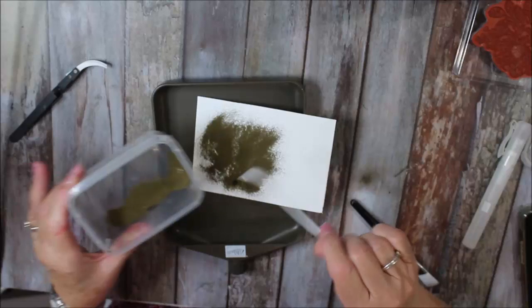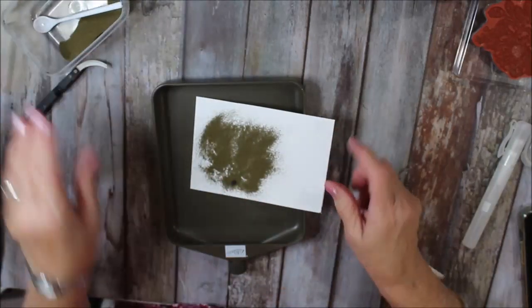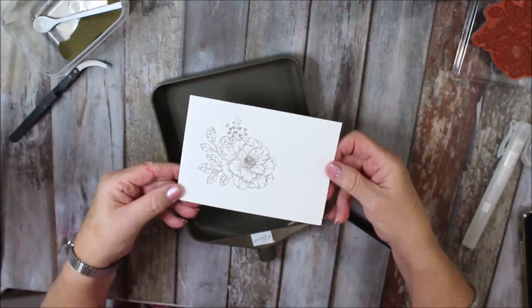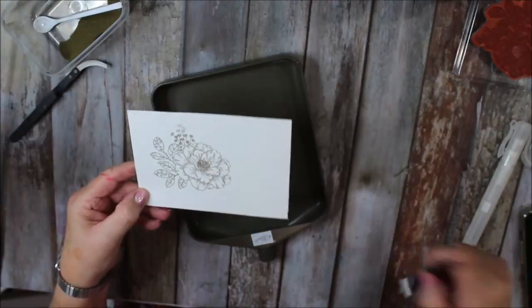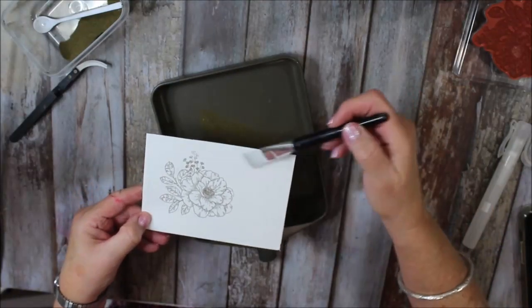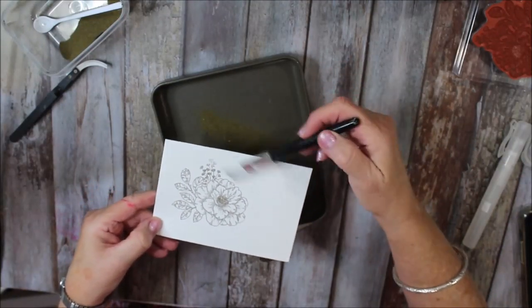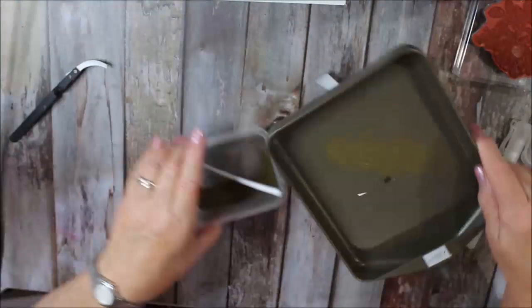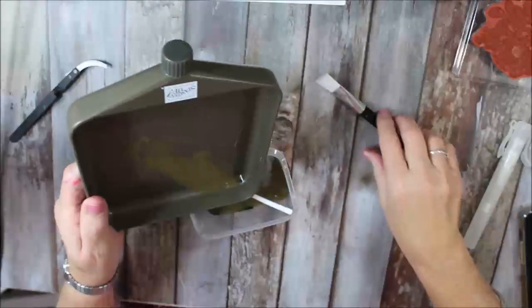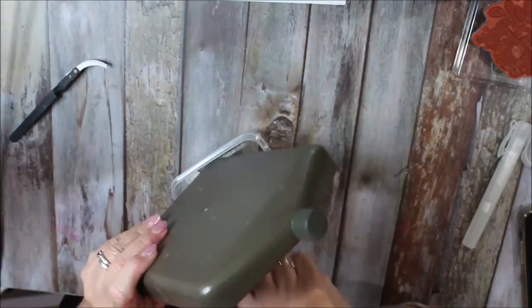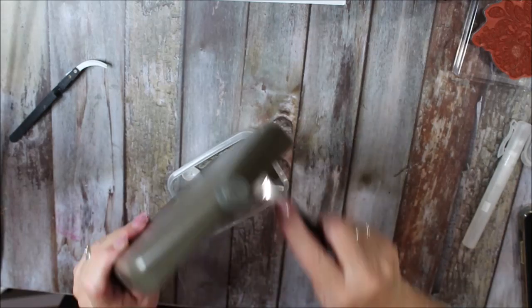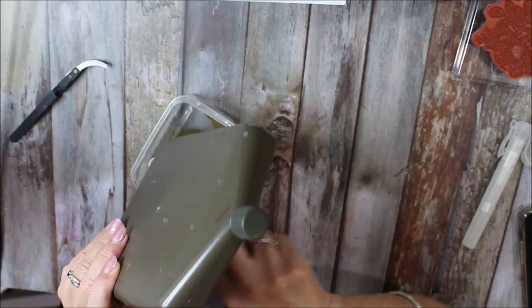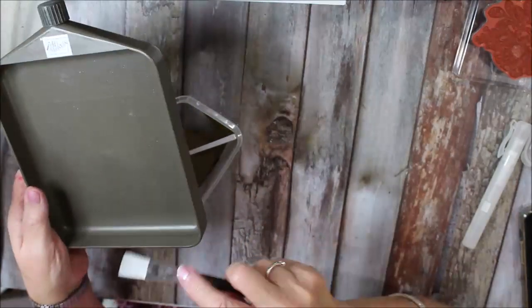Now because we've done our embossing buddy, this powder should only stick where I've stamped. I do see I have got a couple of little specks there so I just use my brush to brush them away. Now I'm just going to put that aside while I empty this back into my tray and I'm going to get all the powder back into the container and I use my brush just to sweep it off.